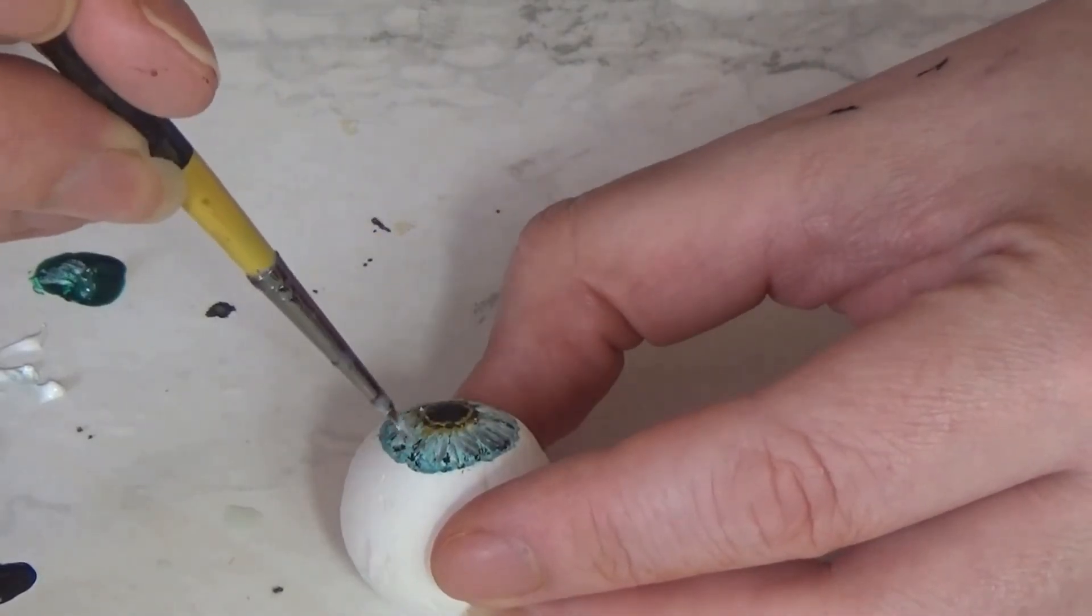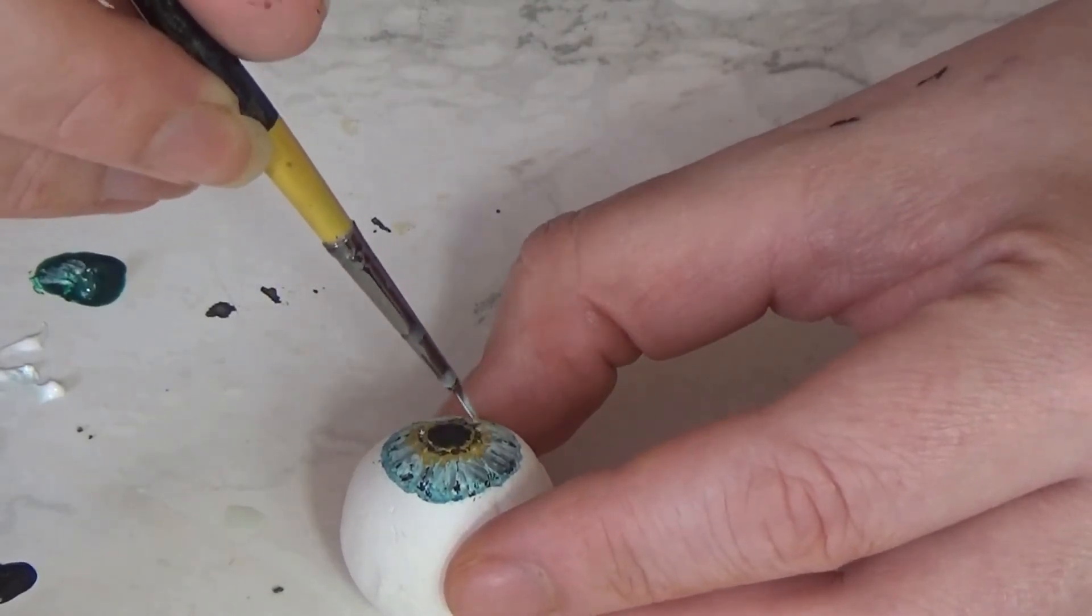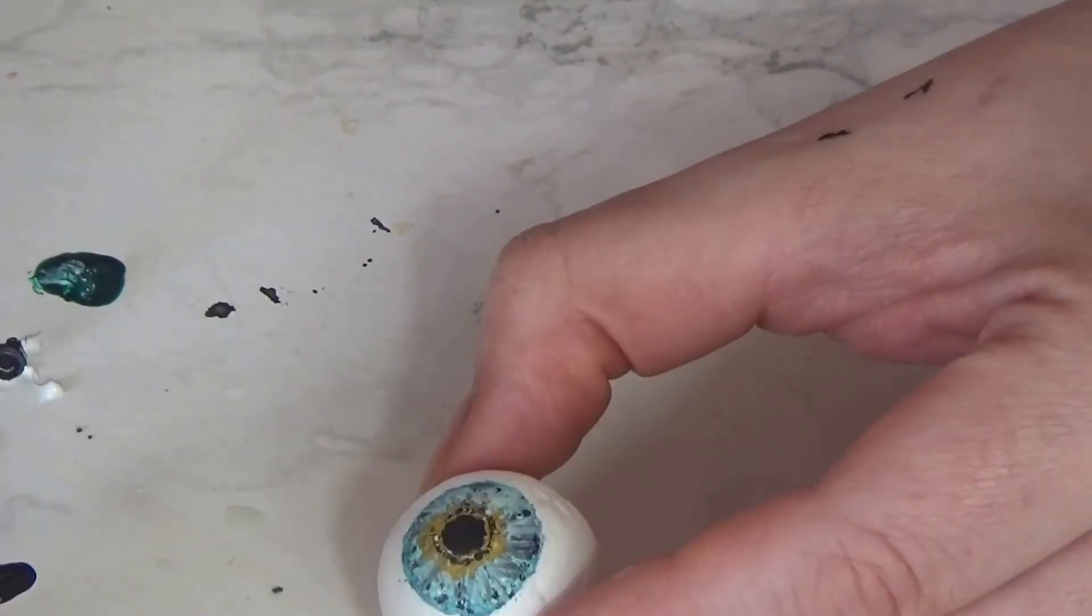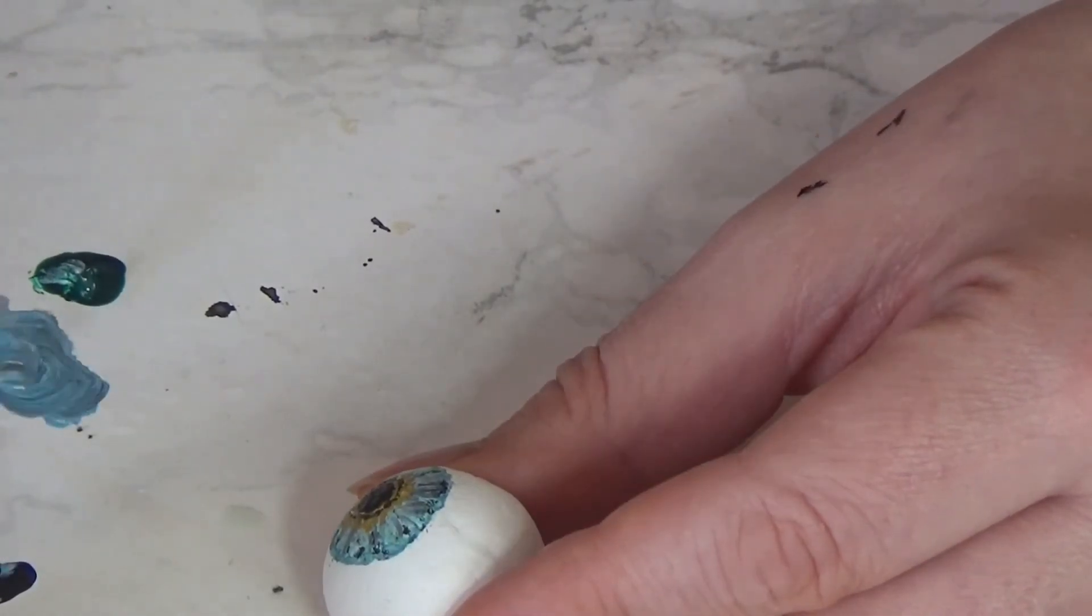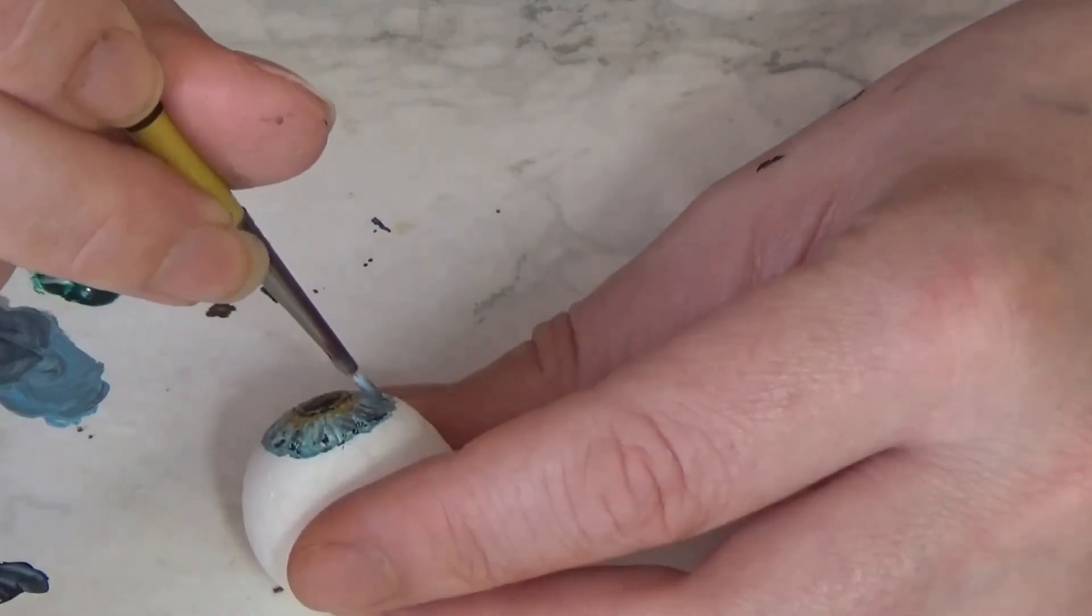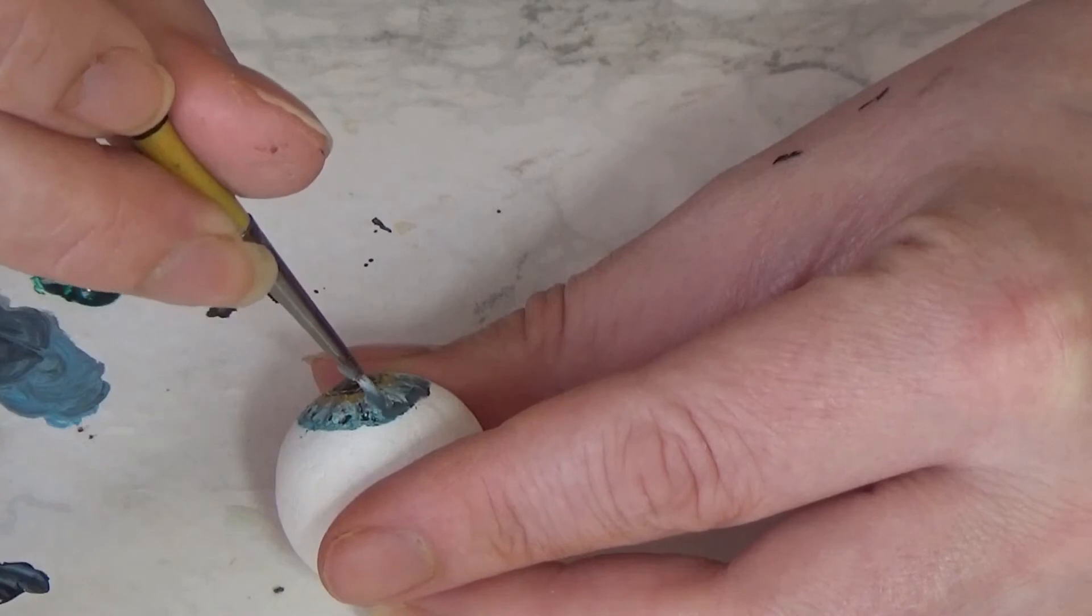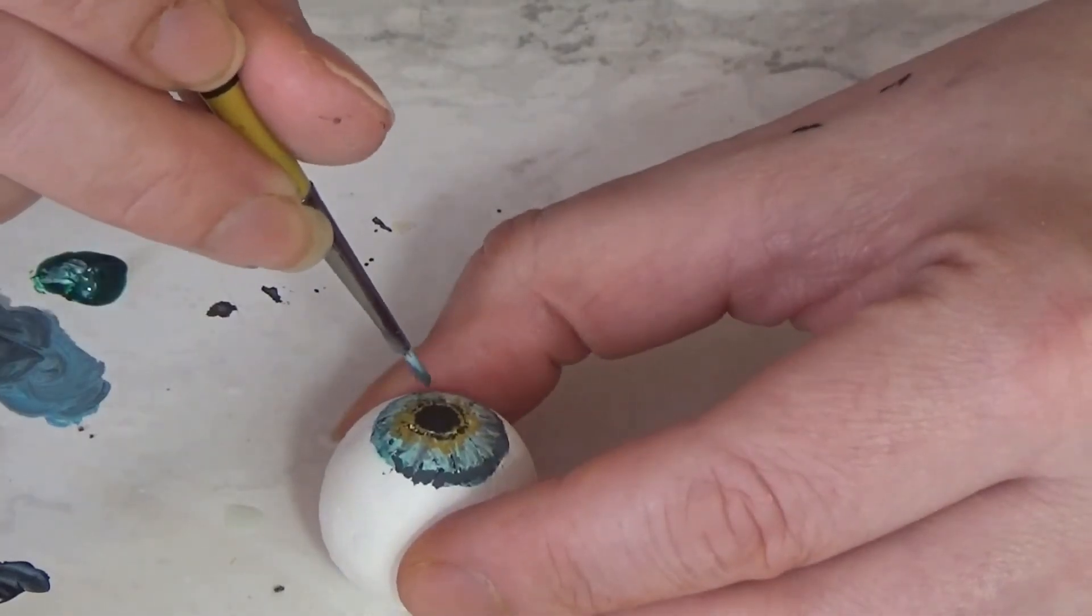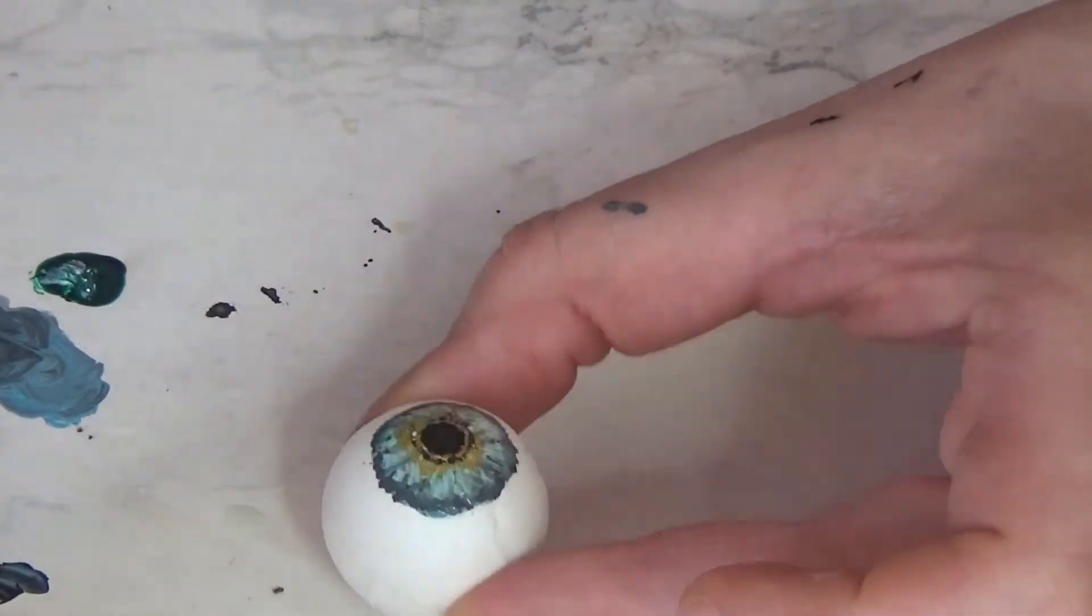Just continue to build up the detail on your eye color until you're happy. You can see that's now starting to look really realistic. Now you do really have to work at this and it does help if you have some sort of basic artistic ability and knowledge. But if you just keep working at it and be patient with it, then you will eventually get something which looks like a realistic eyeball.